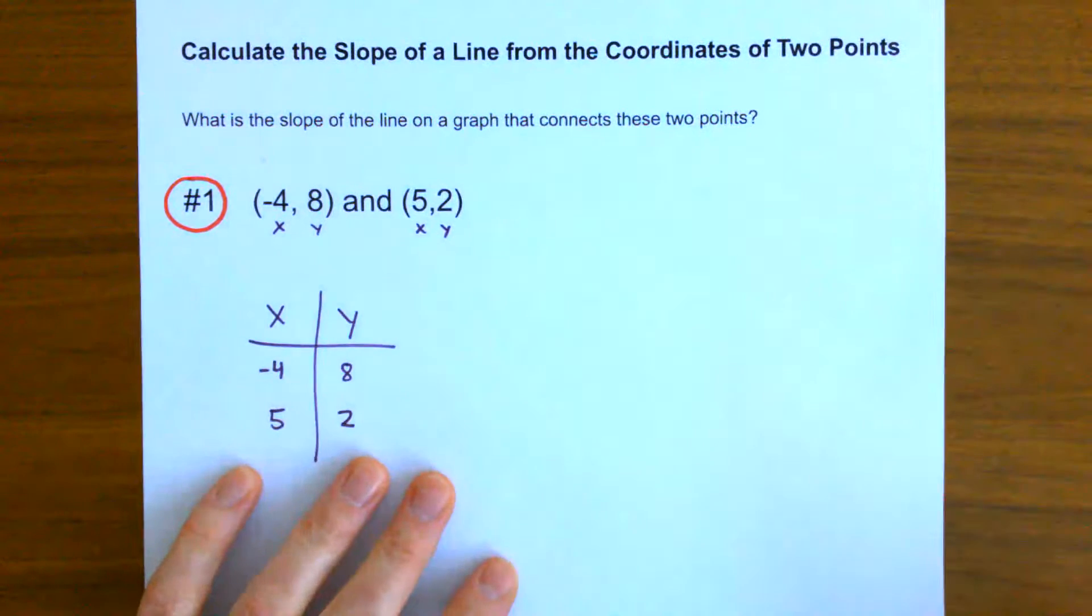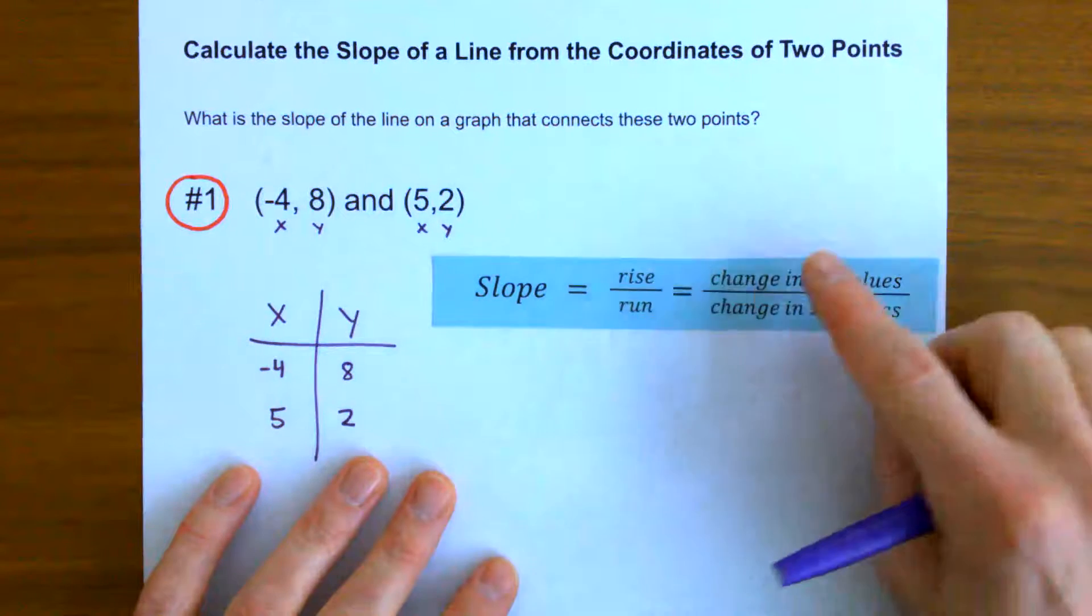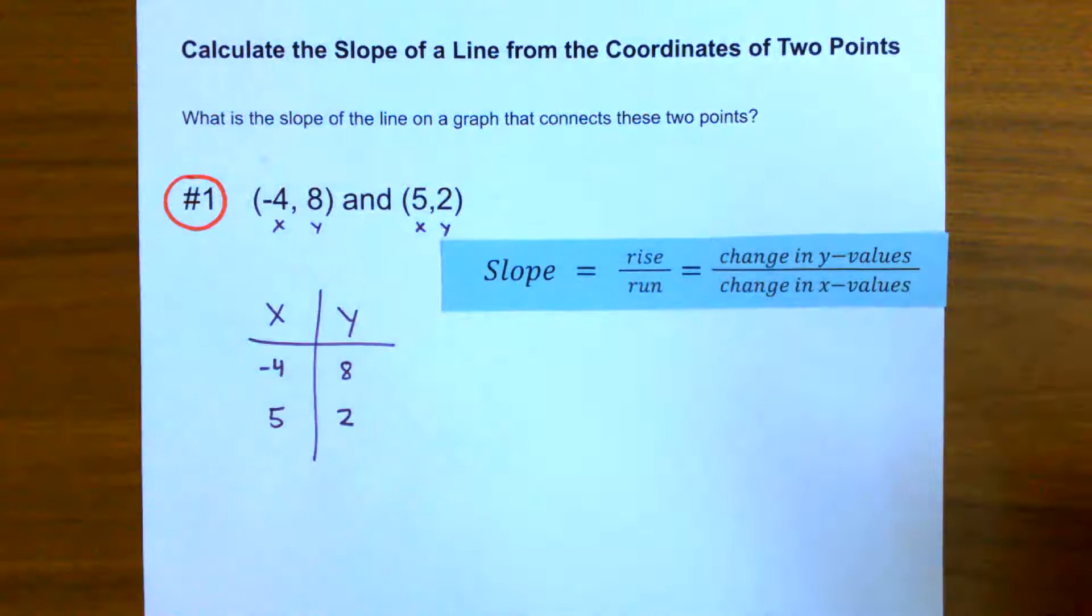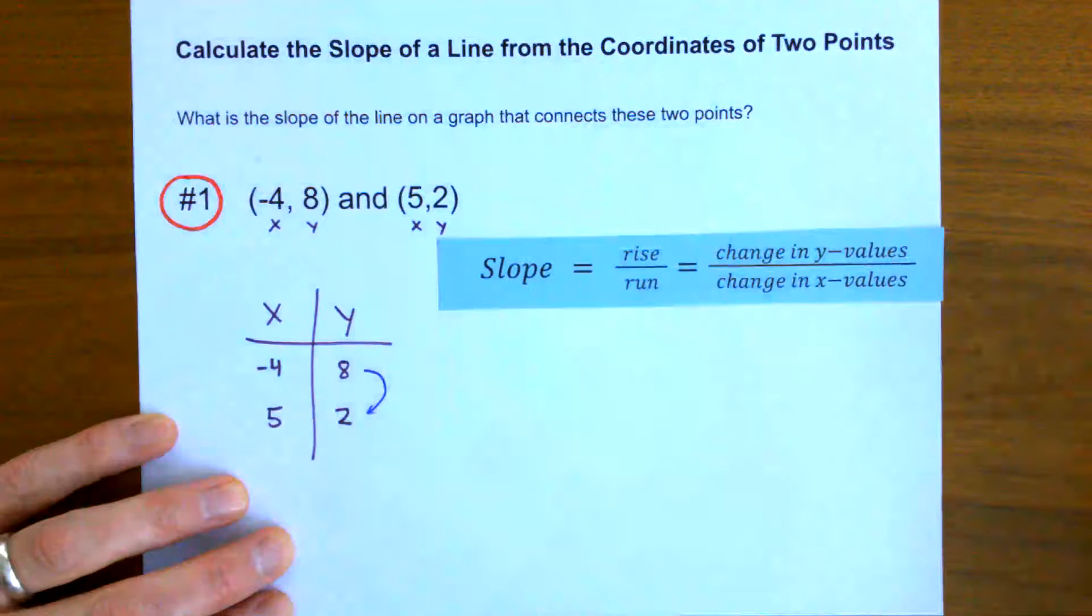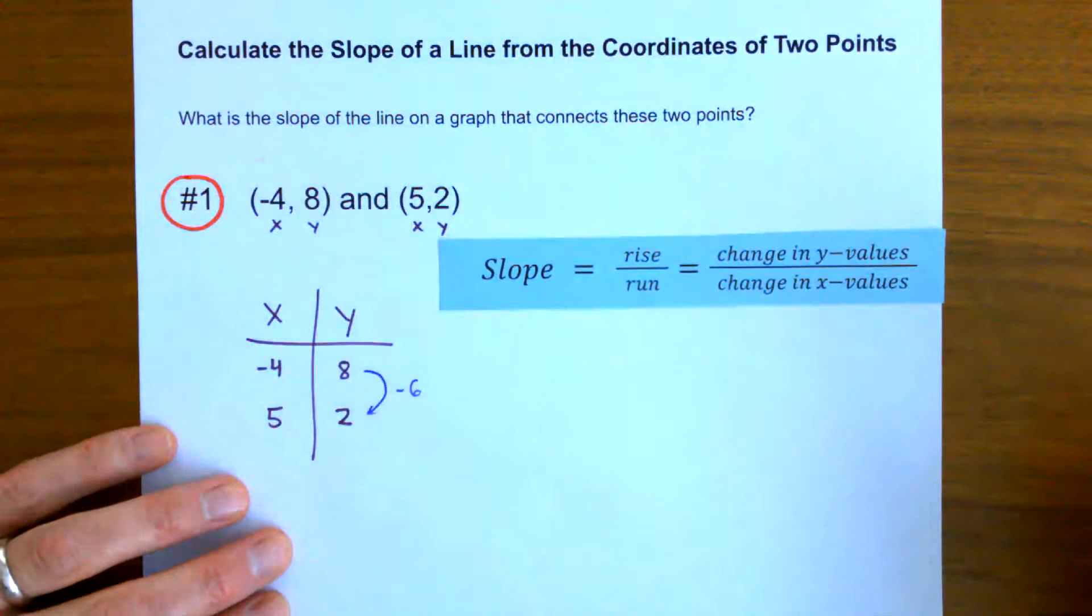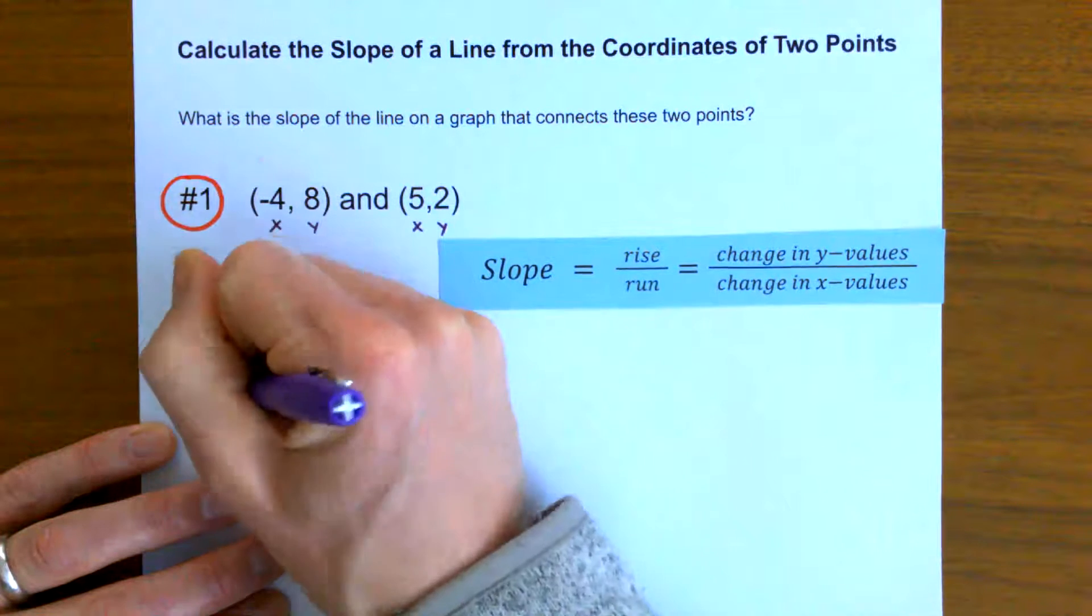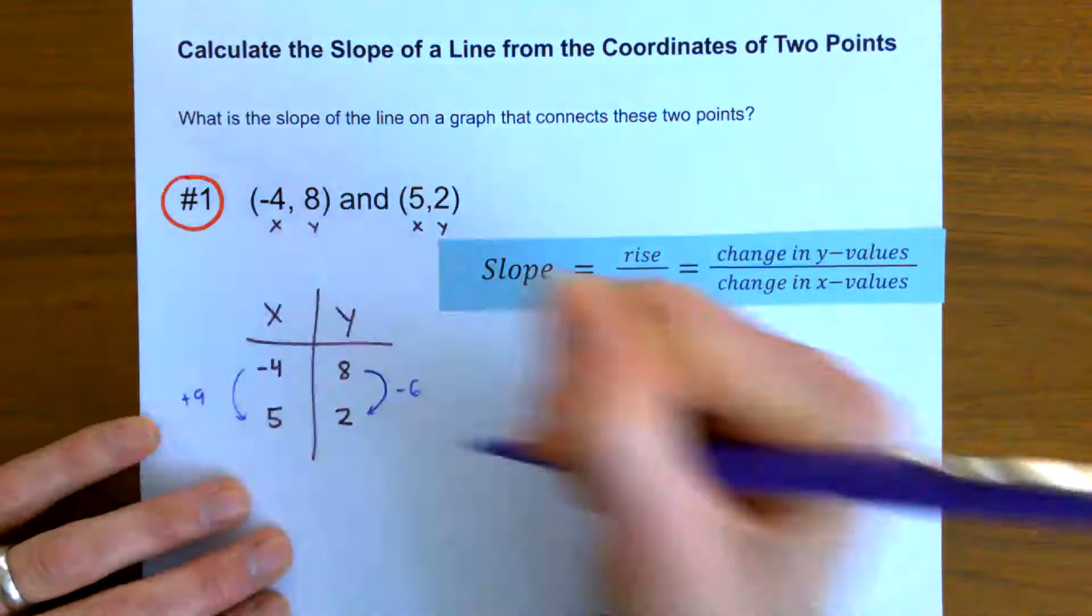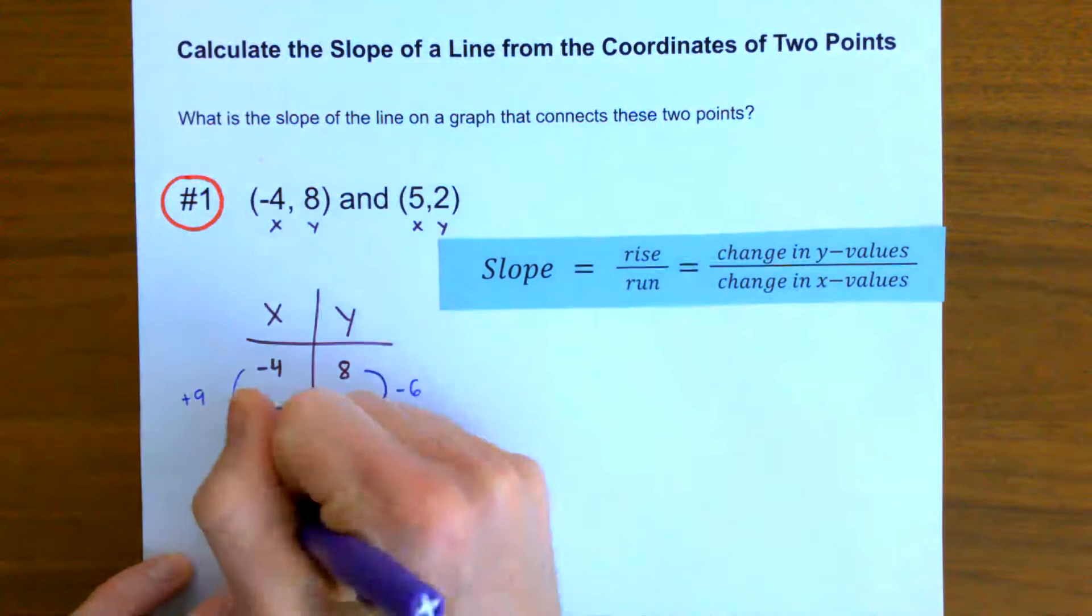And now I can just do the same thing. I want to get the slope, which again is rise over run or change in y divided by change in x. So let's see how the y values are changing. As I go from eight to two, I can see that my y values are decreasing by six. And for the x values, they're going from negative four up to positive five, or that is an increase of nine.